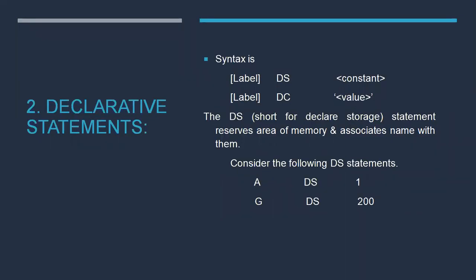Next is declarative statements. In declarative statements, we have two different statements: DC and DS. The syntax is: label followed by DS then a constant, and the second is label, DC, and a value in single quotes. Here, DS stands for Declare Storage. Declare Storage reserves the number of bytes of memory for a particular symbol. For example, A DS 1 indicates that for symbol A, one byte of memory is allocated. Similarly, G DS 200 indicates G needs 200 bytes of memory.